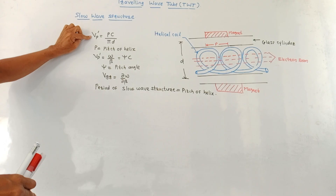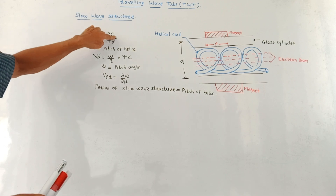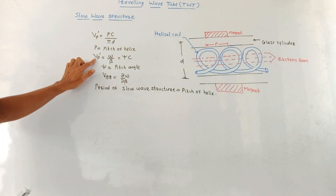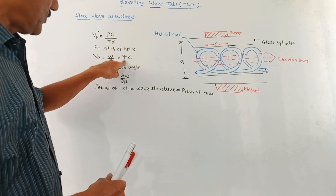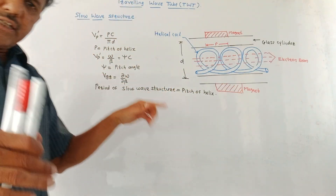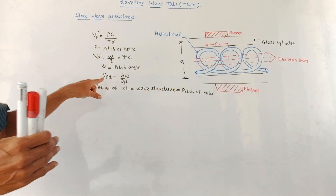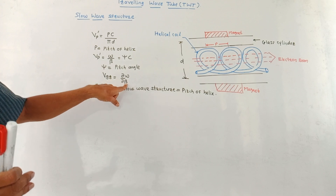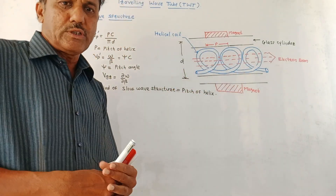There is a parameter called phase velocity Vp, which is given by Pc divided by pi×d, where P is the pitch of the helix, C is the speed of light, and d is the distance between the two glass cylinders. Phase velocity is also given as omega divided by beta, where beta is the phase shift and omega is the angular frequency, which is given by psi times C, where psi is the pitch angle. There is also the concept of group velocity, denoted Vgr, given by dω divided by dβ. An important point is that the period of the slow wave structure should equal the pitch of the helix.